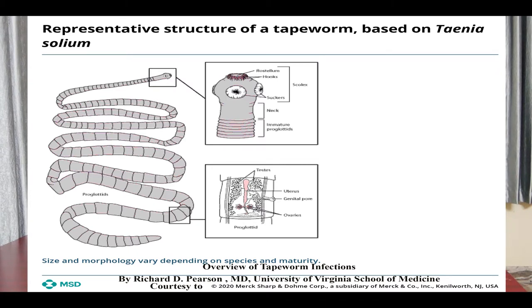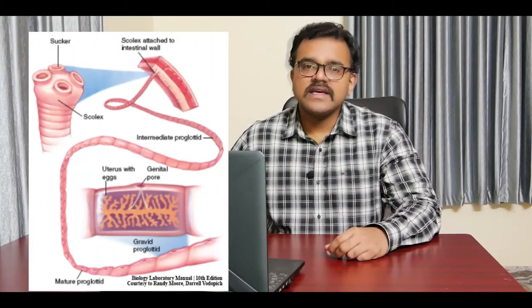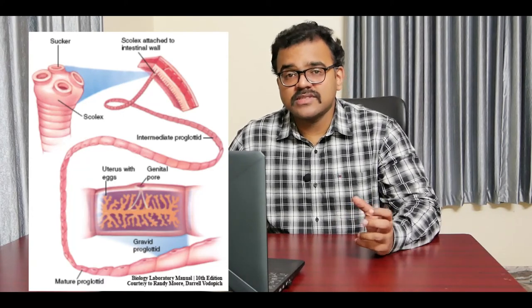The middle proglottids are mature, squarish in shape, and contain male and female reproductive organs. The mature proglottids alternately bear on the right and left margin a tiny protuberance called the genital papilla, with a small genital pore at the tip. The posterior-most proglottids are called gravid proglottids; they are longer than broad and contain a highly branched uterus containing eggs.